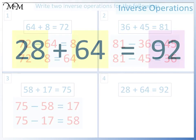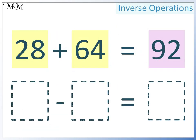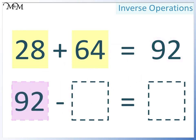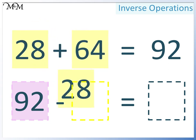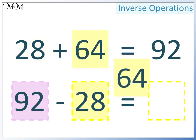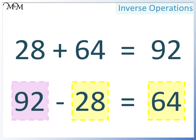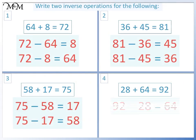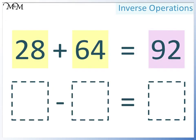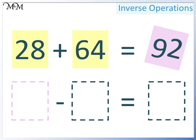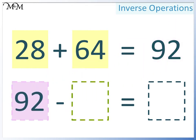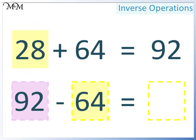Question 4: 28 add 64 equals 92. We write the largest number at the start — the largest number is 92. Next we can have either of the two smaller numbers. This time we'll have 28, so the final number must be 64. The second way is to again write the largest number first — that's 92. This time we'll subtract 64, and finally this equals 28. 92 take away 64 equals 28.